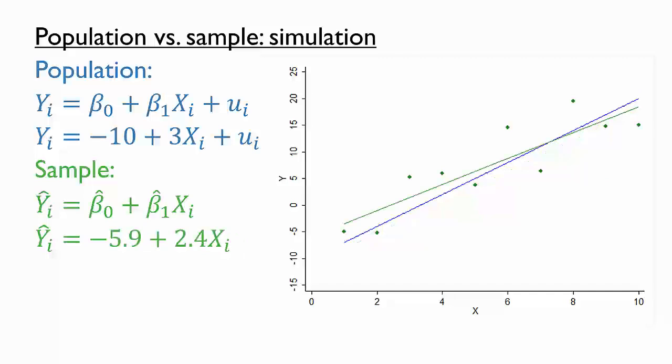Note that each time we get a slightly different sample relationship, despite having the same population relationship. Again, this is due to the randomness in the data generating process, and so each sample estimate of the slope or intercept is most likely different from the actual values of the population parameter.